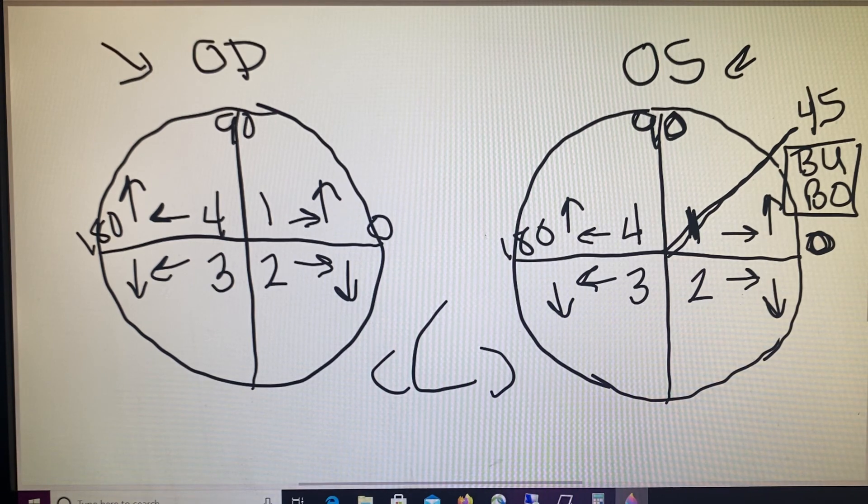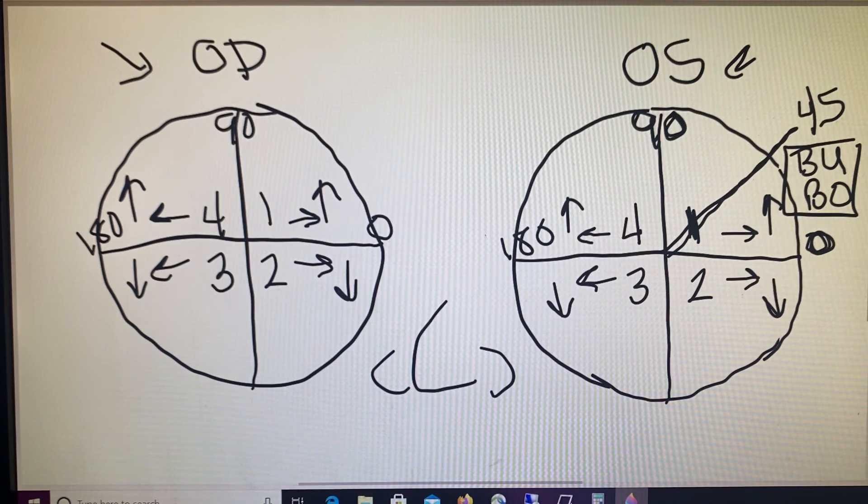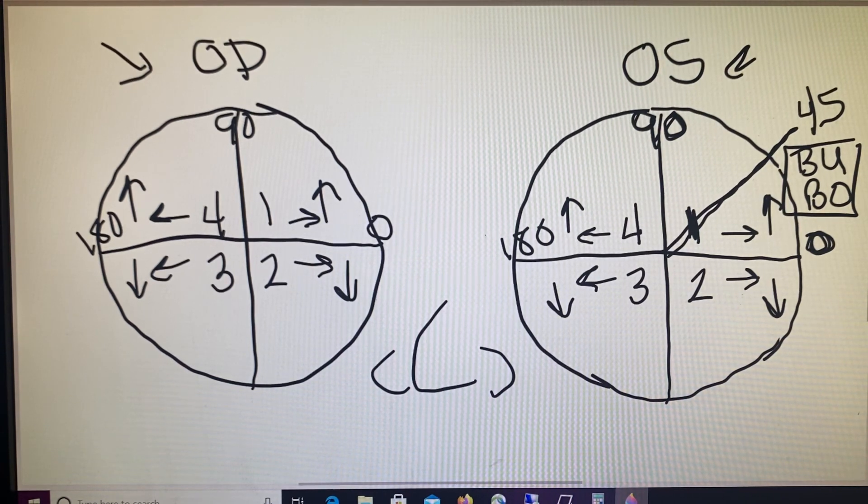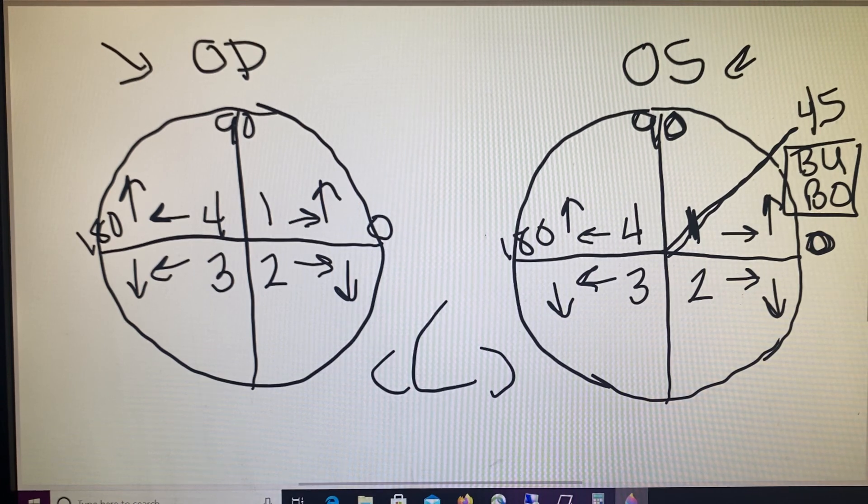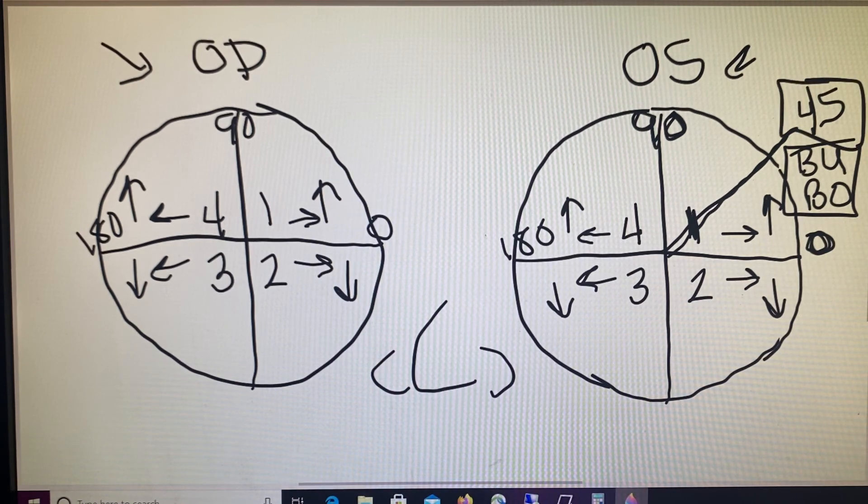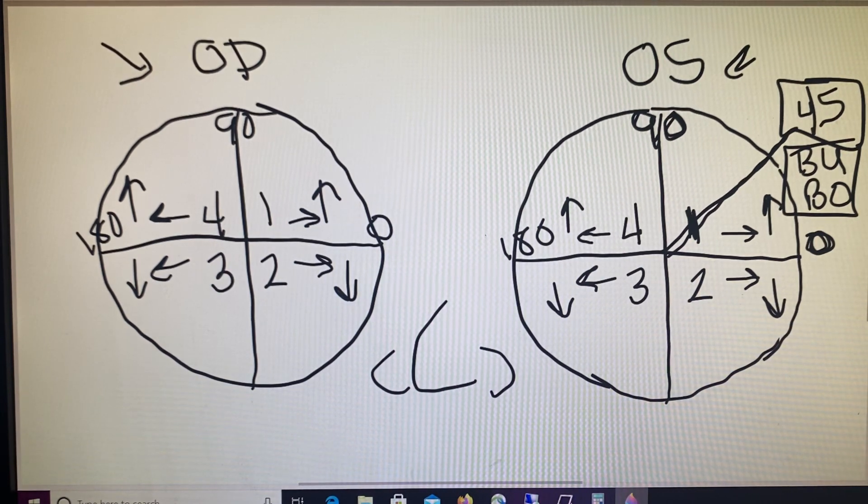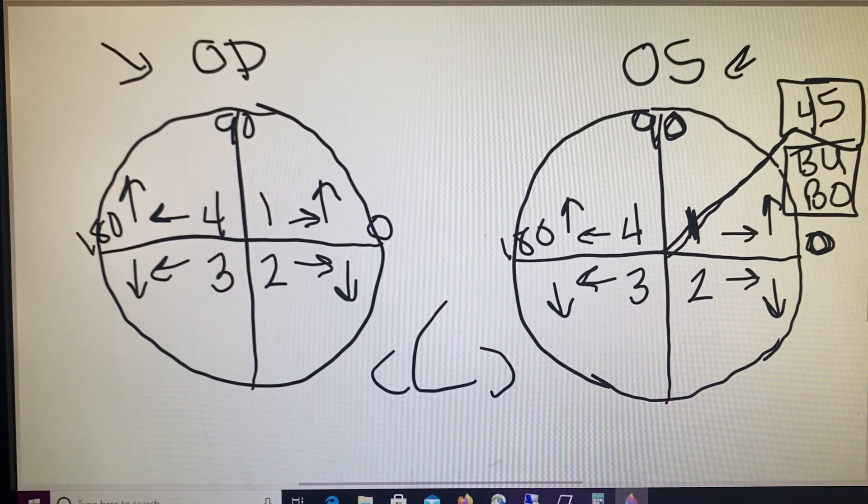So remember, not only do we just work up and down or in and out on that 90 or 180 line, but we could work kind of in those in-between spaces like this example at the 45th meridian where the patient needs prism placed in a couple of different directions, base up and base out.